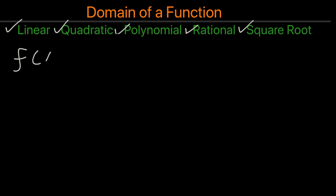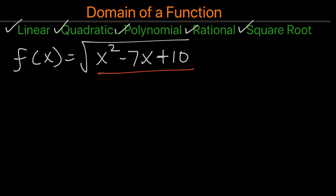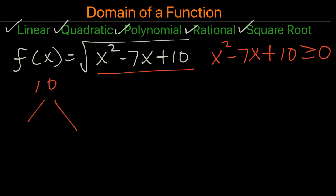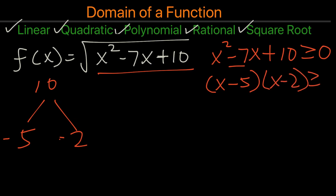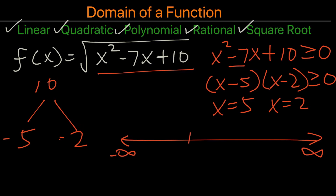Now here's another square root problem. We can see that x squared minus 7x plus 10 must be greater than or equal to 0. Factoring, we get negative 5 and negative 2 to satisfy the negative 7. We rewrite it and solve further. On the interval notation, we have 2 and 5, both solid circles. Whenever we have two circles on the interval notation, we want to do a sign test, which will tell us which region the number could come from.